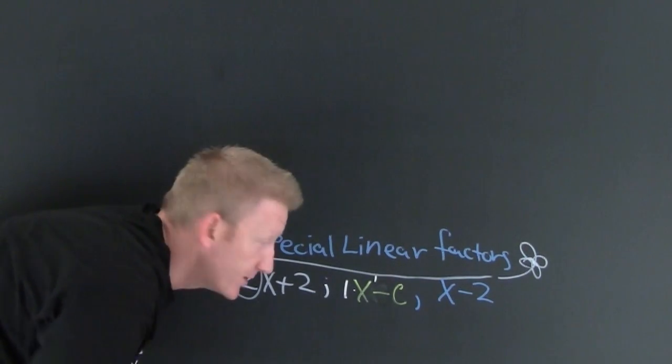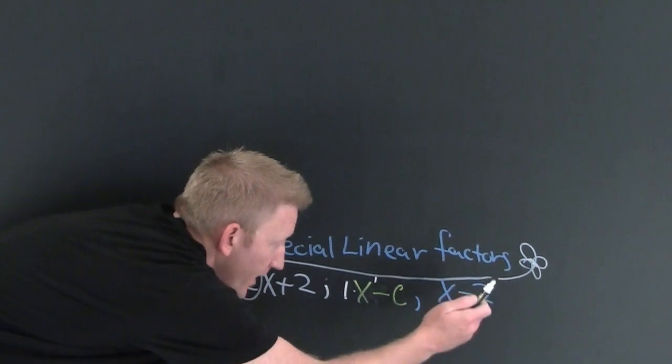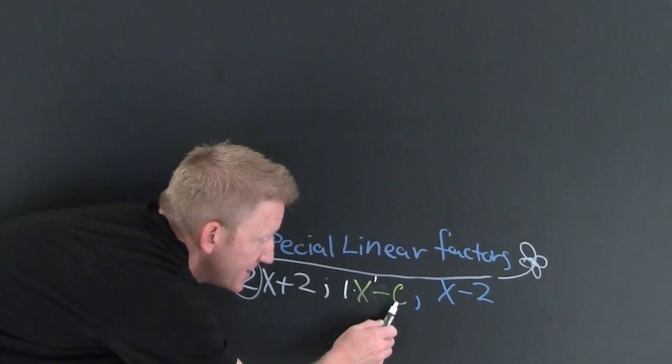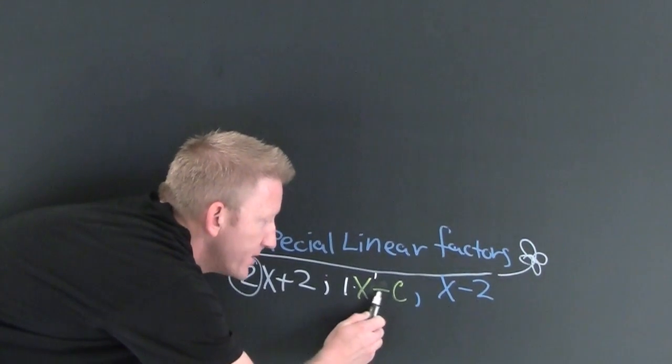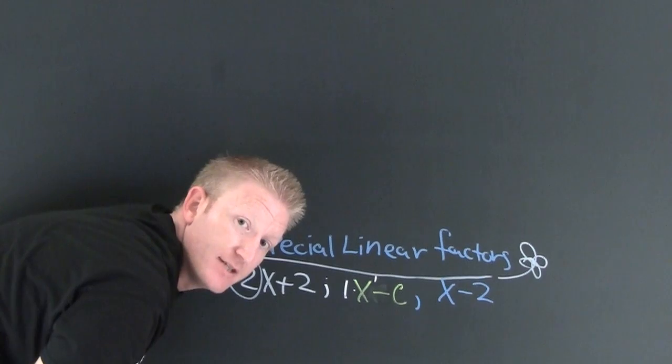An example of a special linear factor is x minus 2. This is x minus c. What goes outside of our box? The opposite of c, or whatever is going to make our denominator 0.